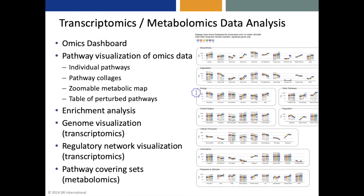The transcriptomics and metabolomics data analysis tools include a tool called the omics dashboard, shown here at the right. There is the ability to visualize omics data onto individual pathways and personalized multi-pathway diagrams, as well as on the zoomable metabolic map. We have enrichment analysis of both transcriptomics and metabolomics data, as well as genome visualization of transcriptomics data, regulatory network visualization of transcriptomics data, and the ability to compute pathway covering sets for metabolomics data.